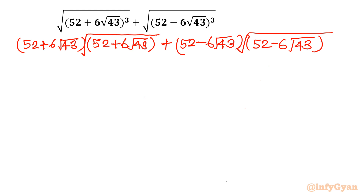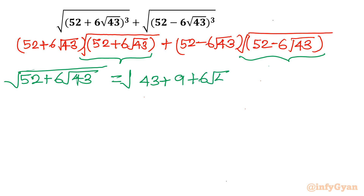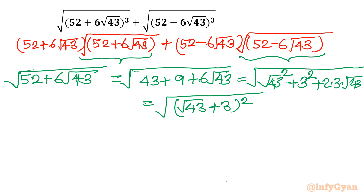We need to simplify √(52 + 6√43). I write 52 = 43 + 9, so 52 + 6√43 = (√43)² + 3² + 2·(√43)·3. This matches the pattern (a + b)², specifically (√43 + 3)². Therefore √(52 + 6√43) = √43 + 3. Similarly, √(52 − 6√43) = √43 − 3. Now we cancel the square and square root.